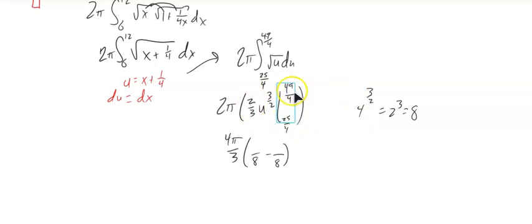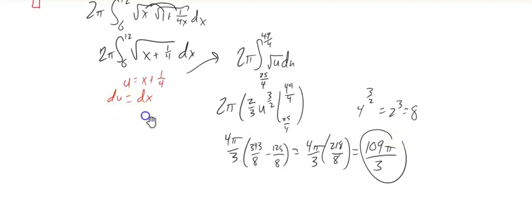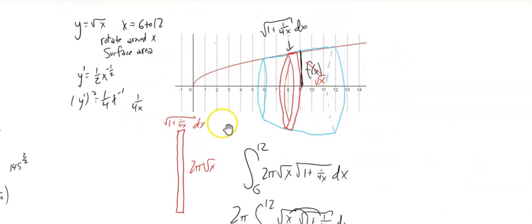And then 49, square root of 49 is 7, 7 cubed is 343. And then square root of 25 is 5, 5 cubed is 125. So this gives us π over 6 times 343 minus 125. Again, all this is mechanics. This is the thinking right here.